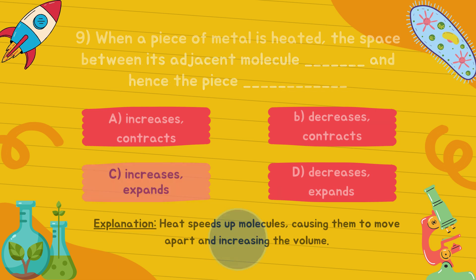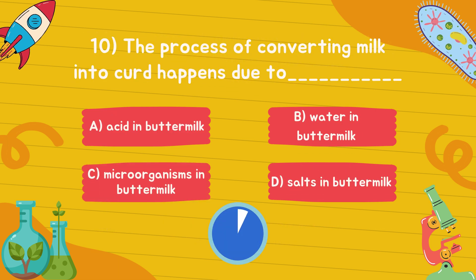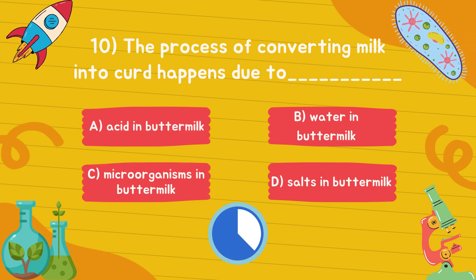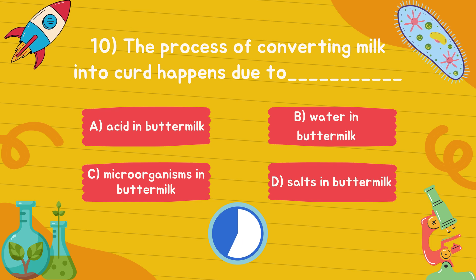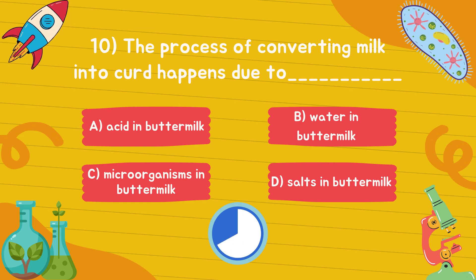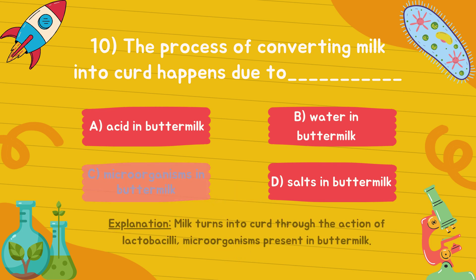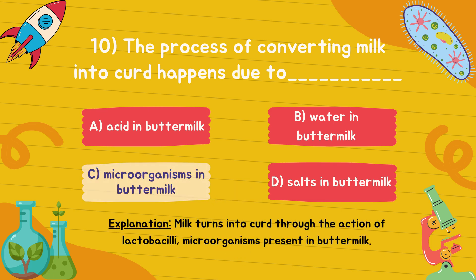The process of converting milk into curd happens due to... Answer is option C, microorganisms in buttermilk.